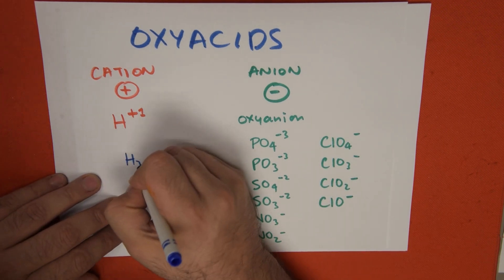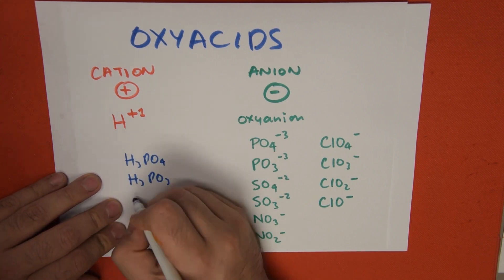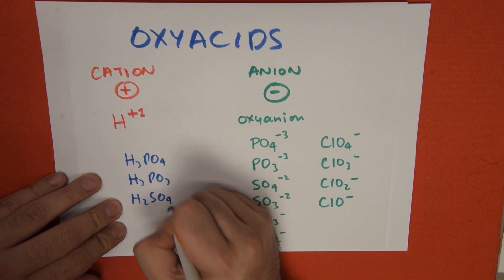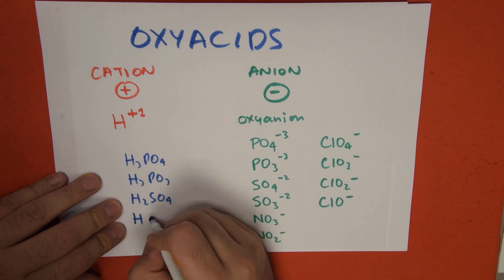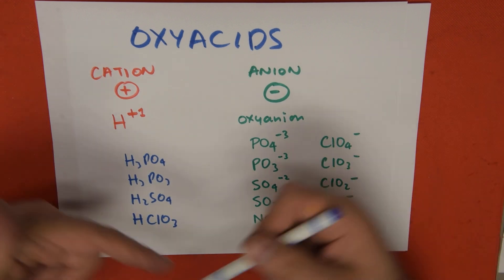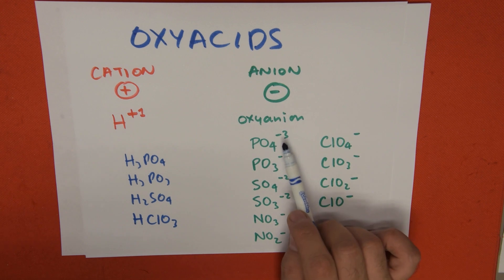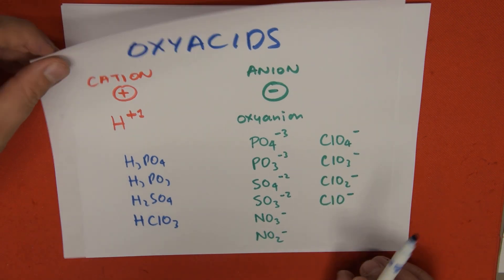So H3PO4, H3PO3, H2SO4. Another example, HClO3. That's just how we mix them. The one is going to go to the oxyanion, and then the valence of the anion is going to go to the hydrogen.